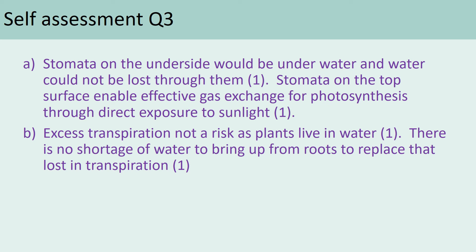For question three — about water lilies — part A asked why it's important that the stomata are on the top of the leaves. The answer is: if they were on the bottom, they would be in water, so gases couldn't be exchanged. If they're on the top, gases can escape or be exchanged — that's the second mark. Part B — why controlling transpiration isn't very important in water lilies: you could say excess transpiration is not a risk because they're in water, so they don't need to worry about how much water they're losing. And for the second point, there will always be water available to take in through the roots.